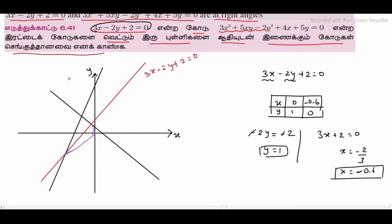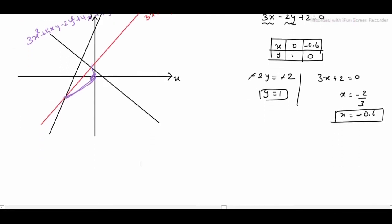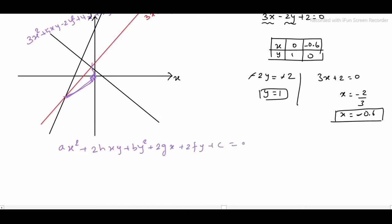So this is the line equation. I will copy it: 3x squared plus 5xy minus 2y squared plus 4x plus 5y equals 0. If I join the right angle, this is the origin. We will be perpendicular to the intersecting point. So we will find the pair of equations. This is the general equation: ax squared plus 2hxy plus by squared plus 2gx plus 2fy plus c equals 0.